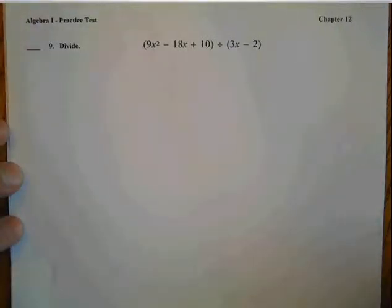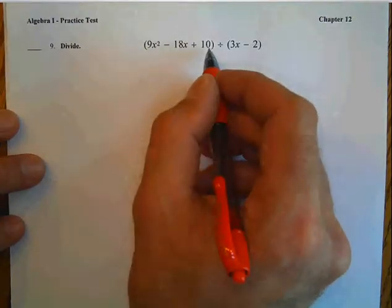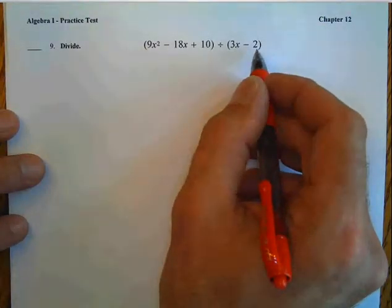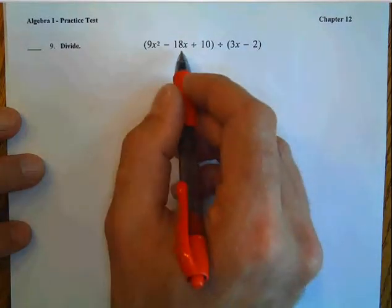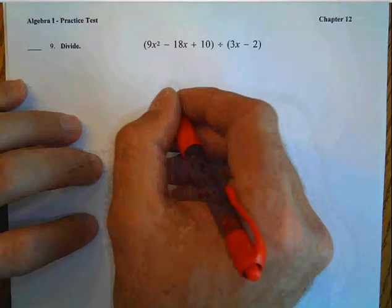This is practice test chapter 12, problem 9. Here we have a trinomial divided by a binomial. Unlike in problem 8 where we divided each portion by the monomial, here we're going to have to do a long division.